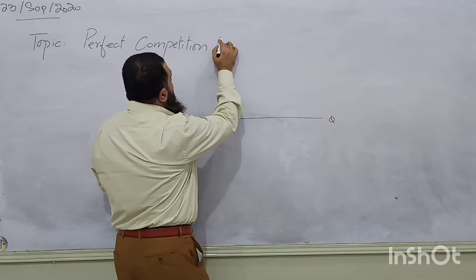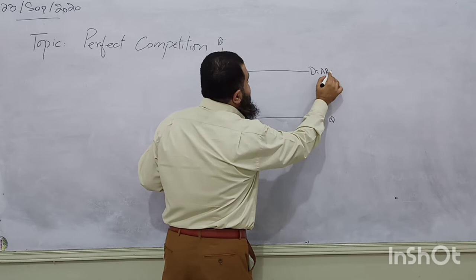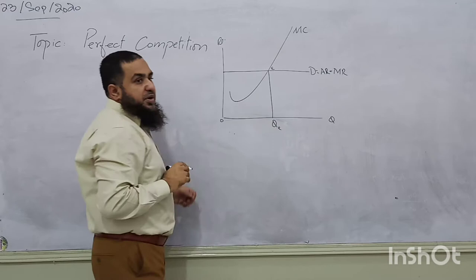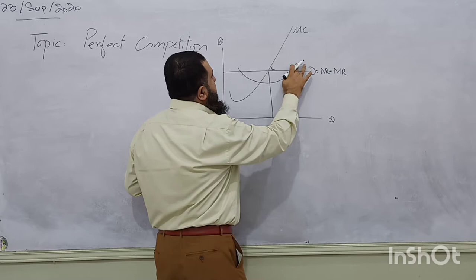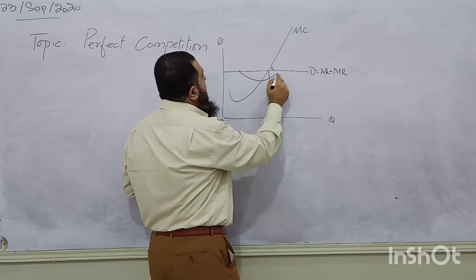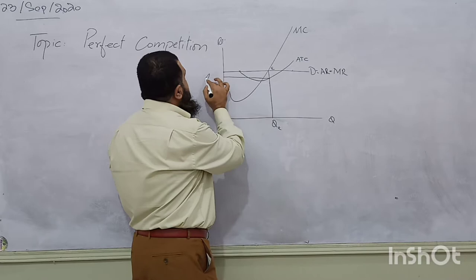Looking at the diagram — supernormal profit, marginal revenue, and marginal cost: the firm is producing at the equilibrium output. Average cost is intercepted by the marginal cost from its minimum point. The firm has this average cost, and since price is equal to average revenue, this area is showing us the supernormal profit.